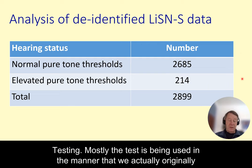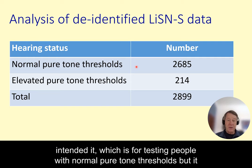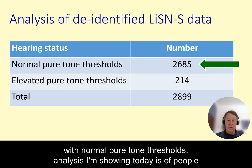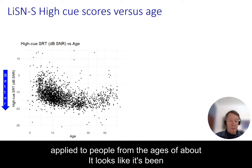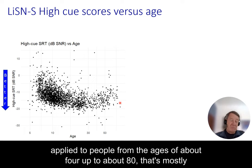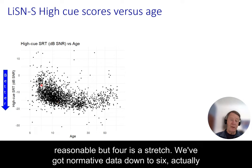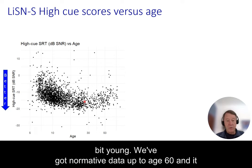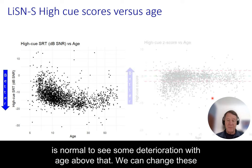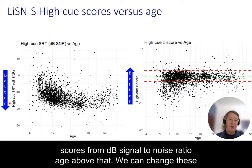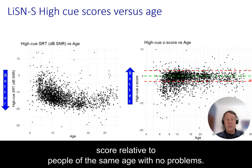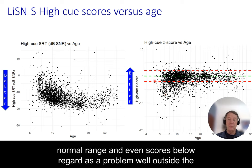Mostly the test is being used in the manner we originally intended — for testing people with normal pure tone thresholds — but it absolutely can be used for people with elevated pure tone thresholds. The analysis I'm showing today is of people with normal pure tone thresholds. It looks like it's been applied to people from about age four up to about 80. We have normative data down to age five, and going up to age 60. It is normal to see some deterioration with age above that. We can convert scores from dB signal-to-noise ratio to z-scores, which show the score relative to normal hearing people of the same age with no problems.